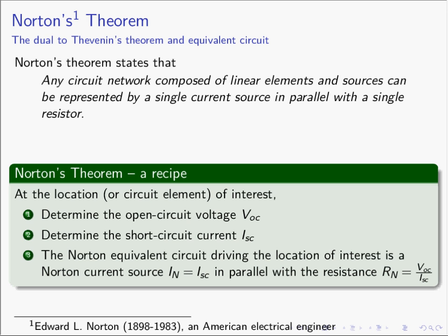Norton's Theorem states that you can take any circuit — and there's that magical word that gives you a great deal of power — any circuit composed of linear elements and sources. So it can be arbitrarily complicated, but if it's linear elements and sources, then it can be represented by a single current source in parallel with a single resistor. Norton's Theorem says you can take an arbitrarily complex circuit network and make a single current source in parallel with a single resistor, and it will behave exactly the same as the more complex circuit.